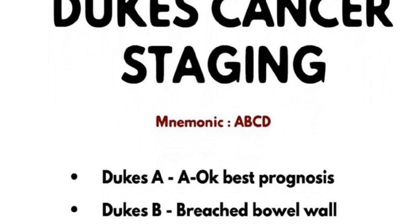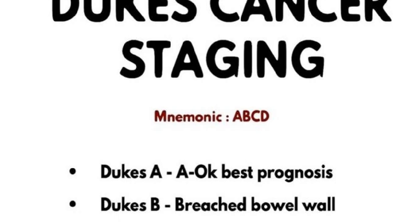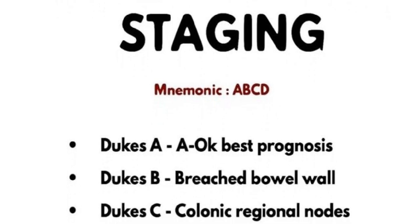Next is Duke B stage, and B is for breached — this cancer has breached the bowel wall. Third is Duke C stage, and C is related to the colonic region; this cancer will spread into the colonic lymph nodes.